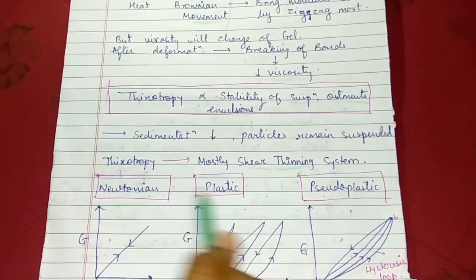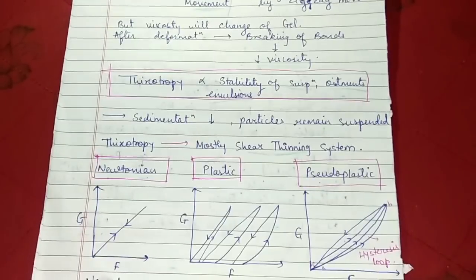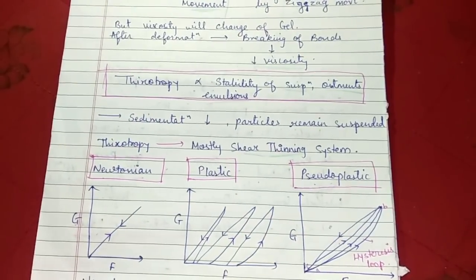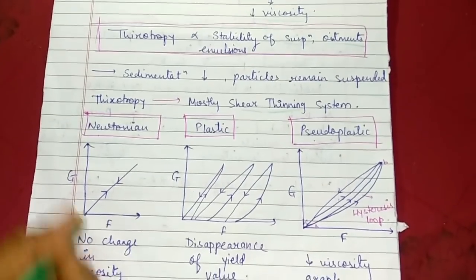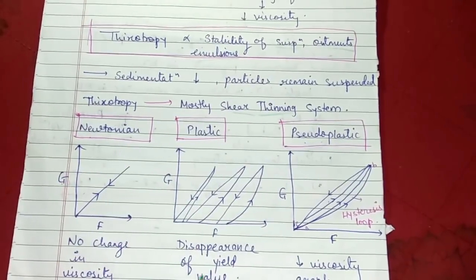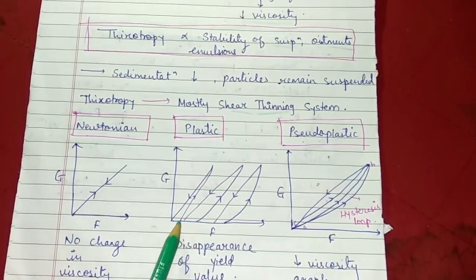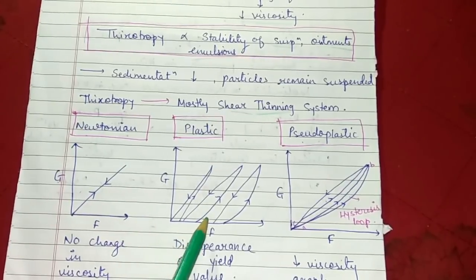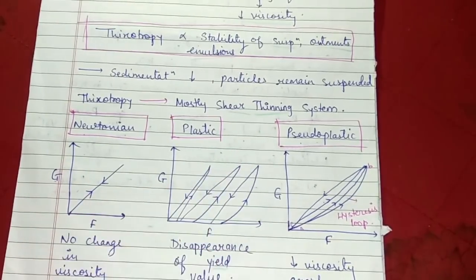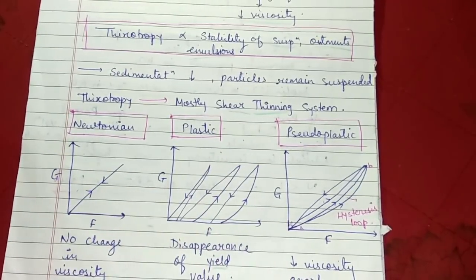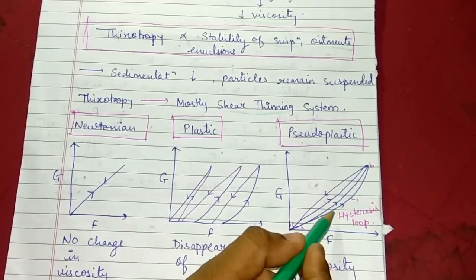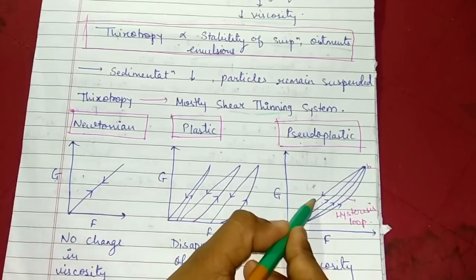We have learned Newtonian, plastic, and pseudoplastic flows. In Newtonian, there is no change in viscosity because mostly water, syrups, and similar suspensions are used in Newtonian flow. In plastic, there is disappearance of yield value when we convert from gel to sol and again from sol to gel. In pseudoplastic, it has decreased viscosity and the graph shifts to the left side. It will form a hysteresis loop and the hysteresis loop will decrease after each cycle.